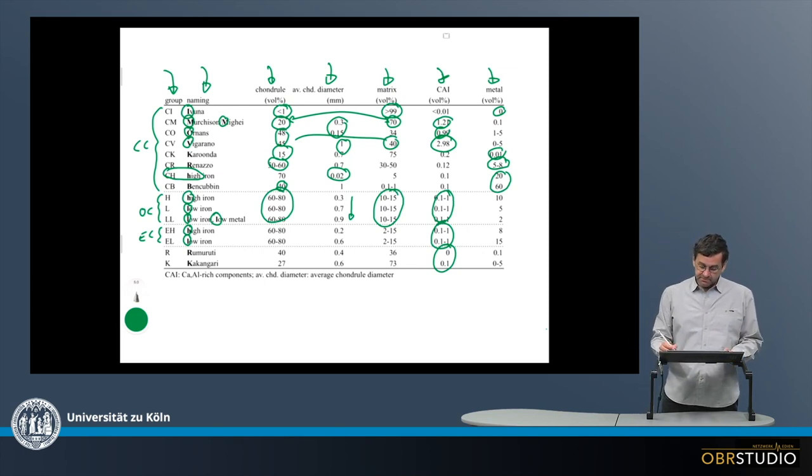The metal decreases from high iron to low iron, low metal, which makes sense, but there's also sulfide, which is not listed here. So sulfide could obscure this trend, which is seen in the enstatite chondrites, for example, that the high irons in enstatite chondrites have 8 percent metal and in the low iron it's 15 percent metal, but this is due to there being more sulfide.